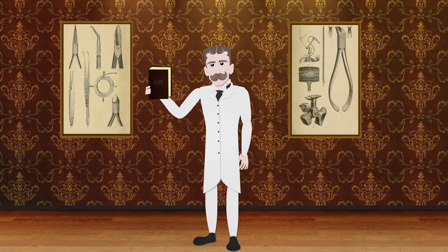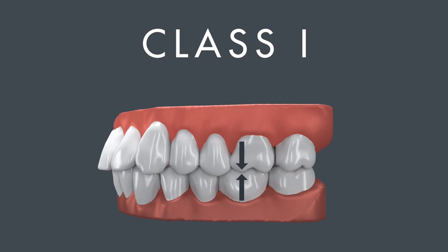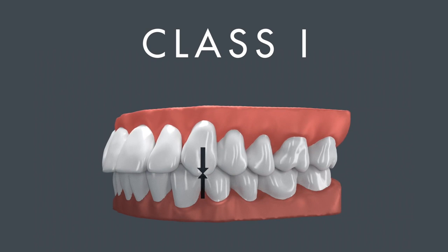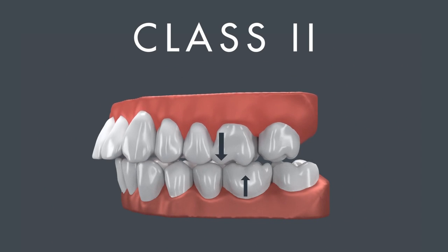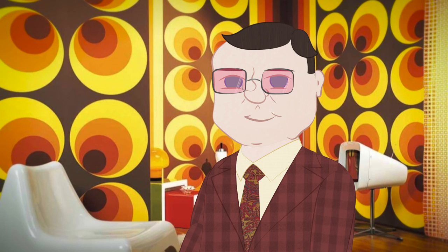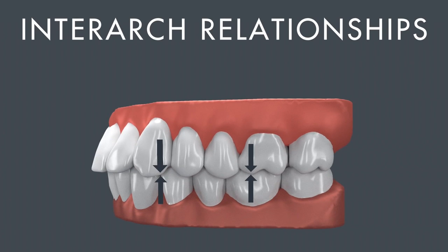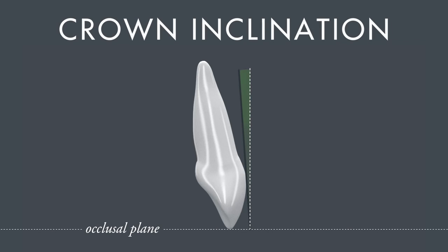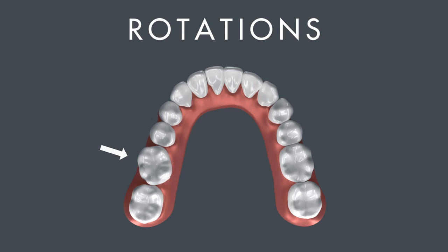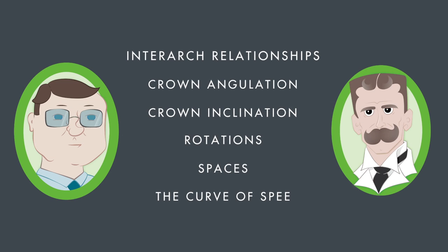To recap: Dr. Angle created a classification system for molar and canine relationships. Class 1 is the ideal relationship — the mesio-buccal cusp of the first upper molar occludes in the buccal groove of the first lower molar, and the distal slope of the upper canine lines up with the embrasure between the lower canine and the first premolar. A Class 2 relationship means the upper tooth is anterior to ideal; Class 3 means it's posterior. Dr. Andrews expanded upon this to create the Six Keys to Normal Occlusion: inter-arch relationships (molars and canines should be Class 1), crown angulation (crowns should tilt mesially), crown inclination (crowns should tilt facially), no rotations, no spaces, and the curve of Spee should be flat or slightly concave. Evaluating these aspects of your patient's occlusion can help you identify dental problems — and that's what we'll discuss in our next video.